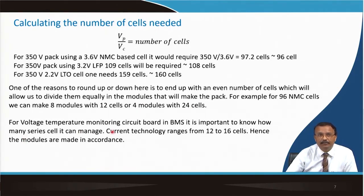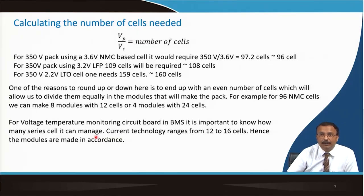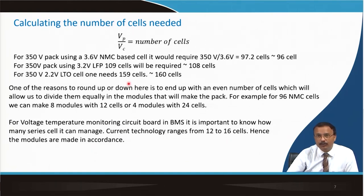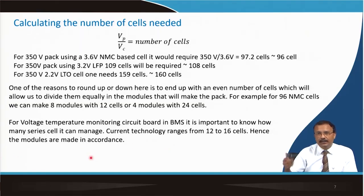For the voltage-temperature monitoring circuit board in a BMS, it is important to know how many series cells it can manage. Current technology ranges from 12 to 16 cells per BMS. You cannot have an unlimited number of cells in series for one BMS — 32 would be too many. Therefore you must break the required cells into different modules so that individual BMS units can control temperature, state of health, state of charge, and other parameters.